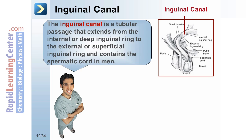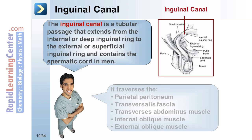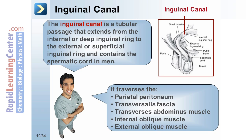The inguinal canal is a tubular passage that extends from the internal or deep inguinal ring to the external or superficial inguinal ring and contains the spermatic cord in men. It traverses the parietal peritoneum, transversalis fascia, transversus abdominis muscle, internal oblique muscle, and external oblique muscle.